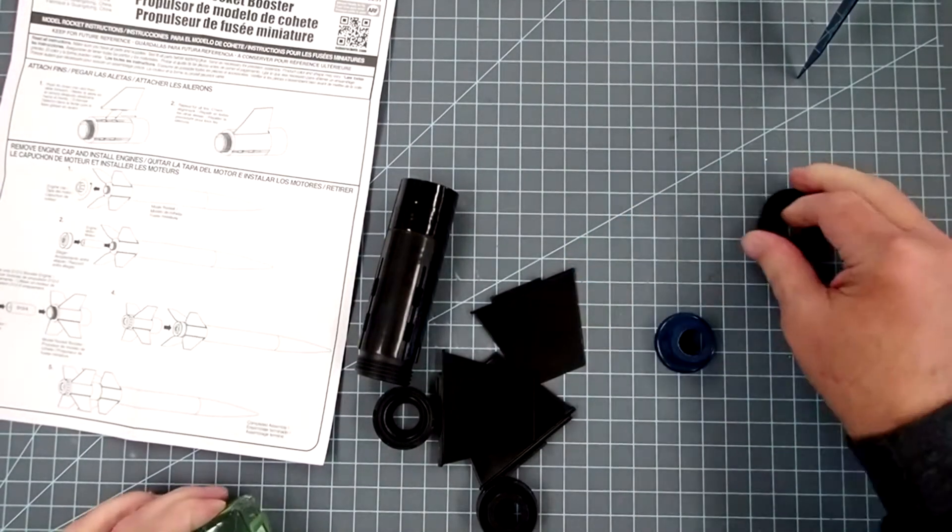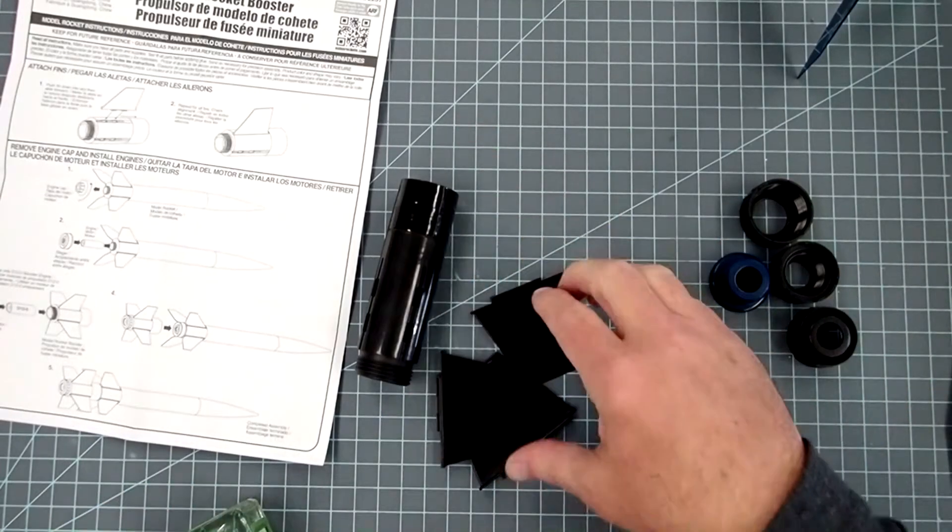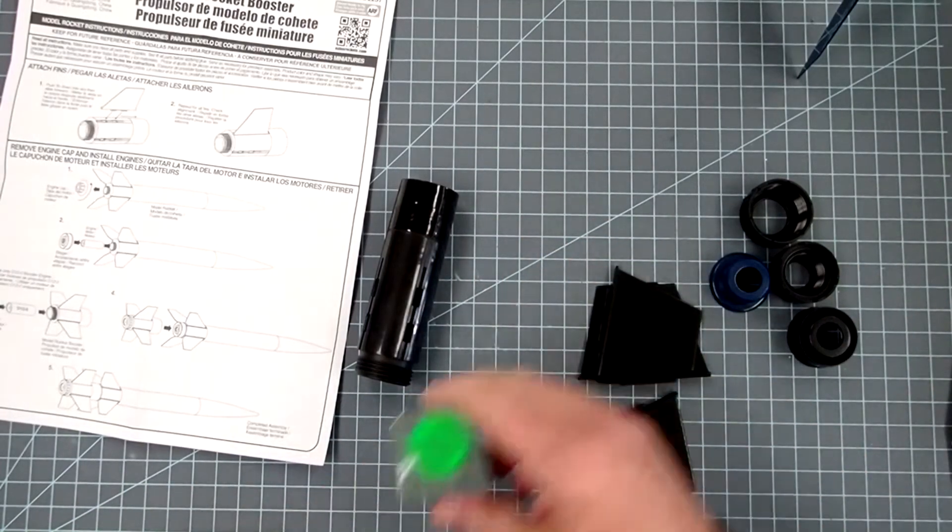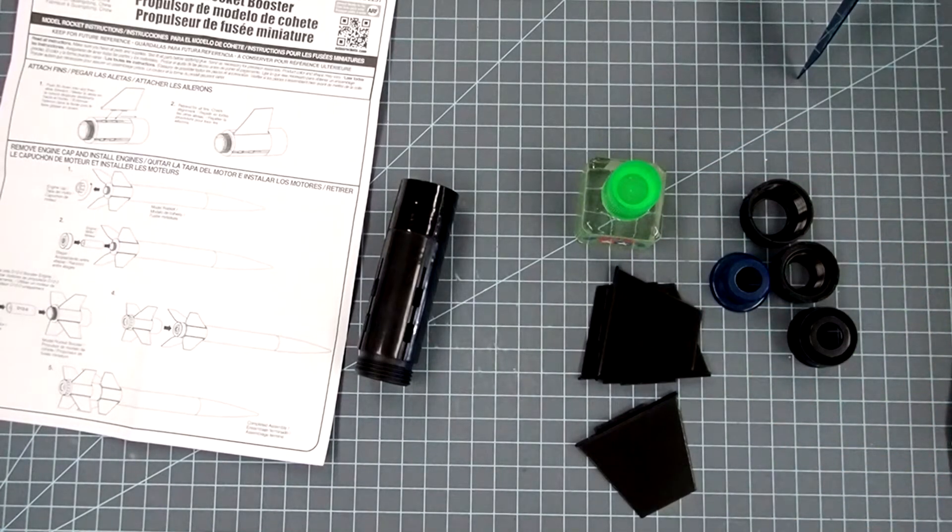So to put this together, all we need to do is glue the fins on. And for this, you can either use plastic model cement like this or in the tube, or you could use super glue. Either one will work fine.